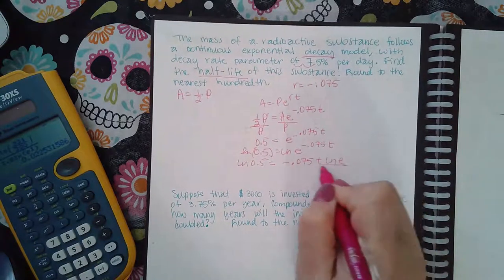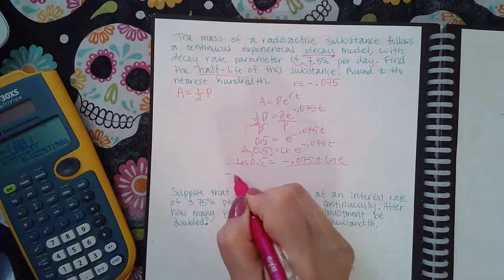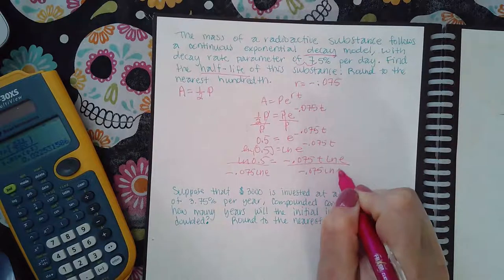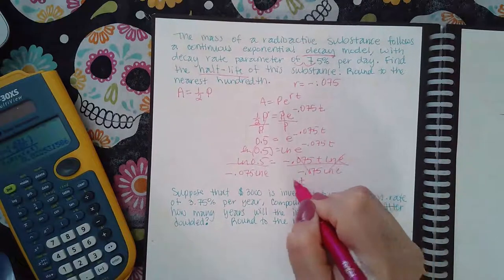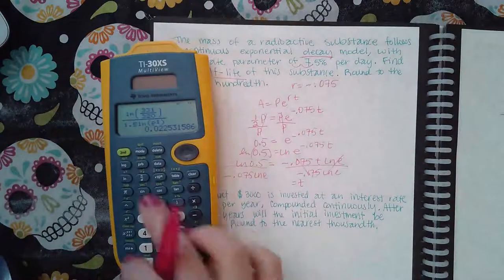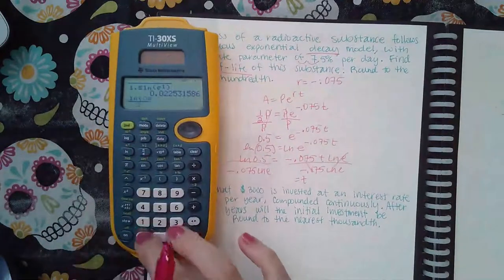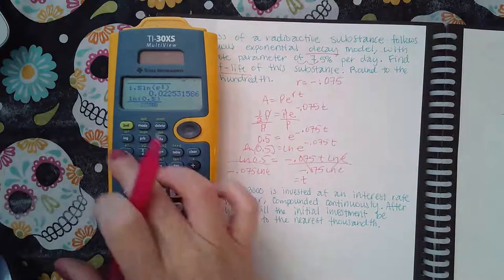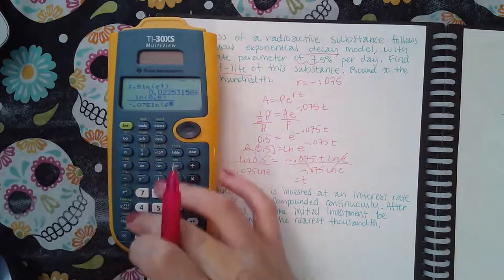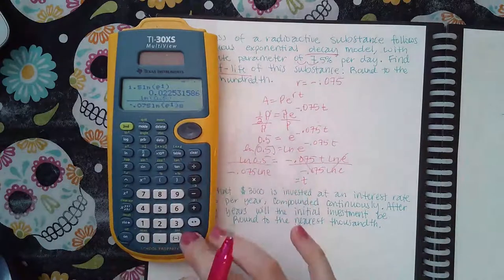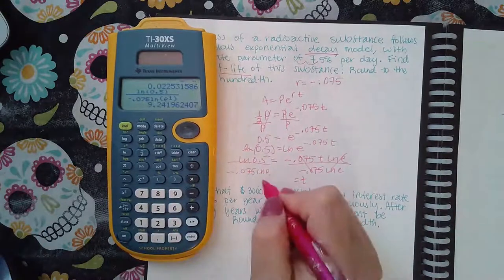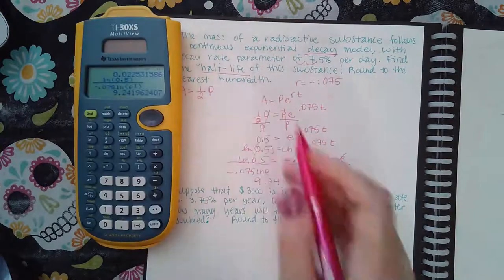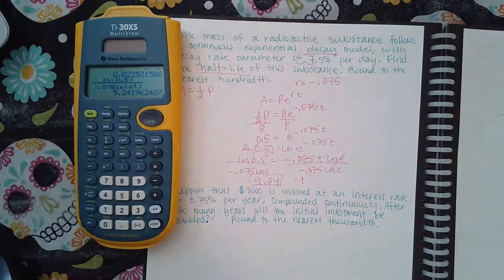And then you divide both sides by negative 0.075 ln of e so that you can get the t all by itself. You can type that in your calculator, so ln of 0.5 over negative 0.075 ln of e. And I get 9.24. It does want me to round it to the nearest hundredth, so it is exactly 9.24.